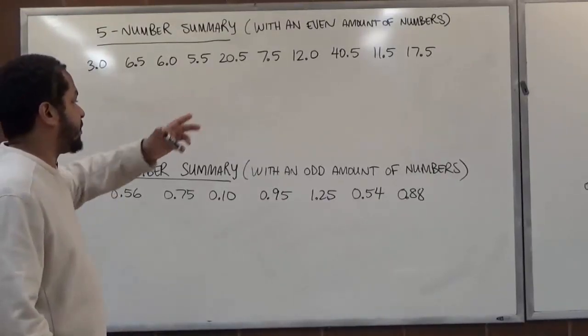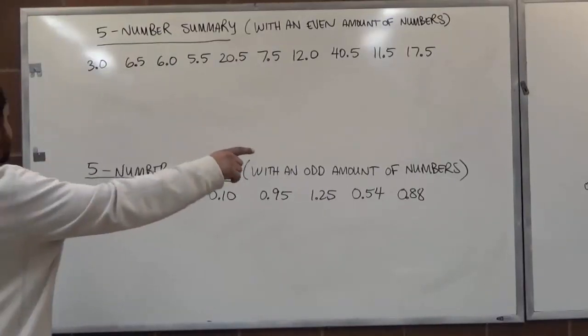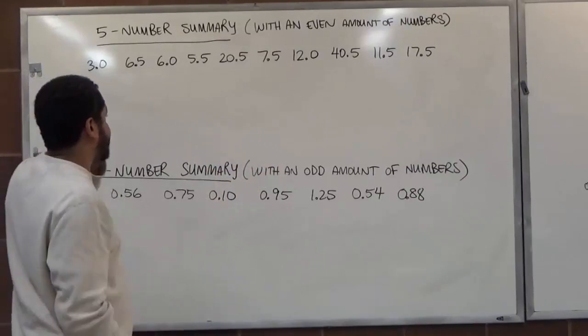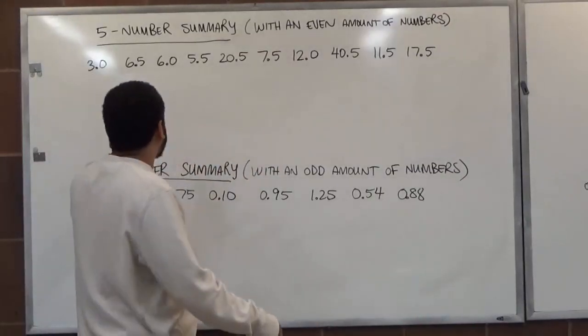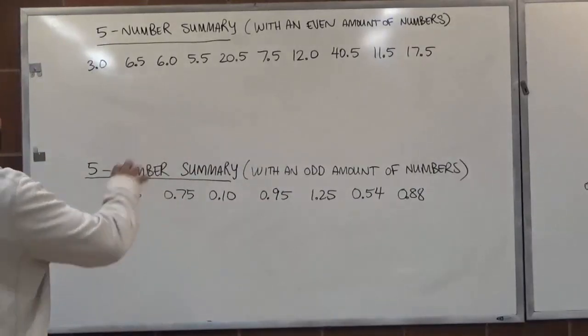We're going to arrange them in order first. After we arrange in order, the min and the max are the first and the last numbers, while the median is the middle term, and the Q1 and Q3 are going to be based on middle positions of the left and the right data sets.